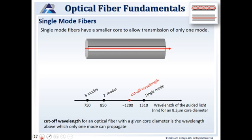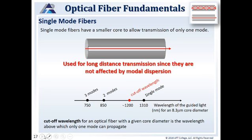For single-mode fiber: single-mode fibers have a smaller core, which allows transmission of only one mode. We have a cutoff wavelength based on the core diameter. For an 8.3 micrometer core, the cutoff wavelength is about 1,200 nanometers. If we put an 850 nm wavelength down this fiber, we could have two modes, and at 750 nm we could have three modes. But at about 1,200 nm, the wavelength allows only one mode to travel. So we use 1,310 nm sources for these fibers. Cutoff wavelength is the wavelength above which only one mode of light can propagate. Single-mode fibers are used for long distance transmission since they are not affected by modal dispersion.